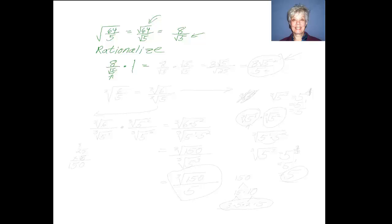I can make 1 take any form I want, just so long as I have the same number in the numerator and denominator of the fraction. I'll take 8 over the square root of 5 times 1 in the form of the square root of 5 over the square root of 5. This will give me, on top, 8 times the square root of 5. On the bottom, the square root of 5 times the square root of 5, which is the square root of 25, which is 5. So the answer is going to be 8 times the square root of 5 over 5.